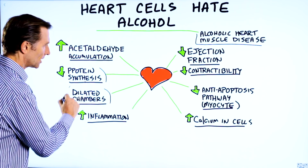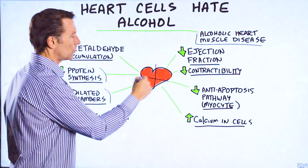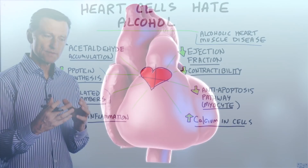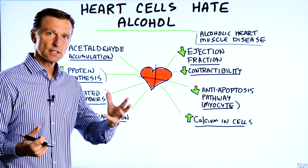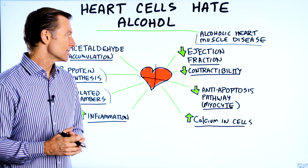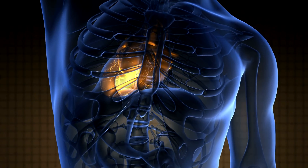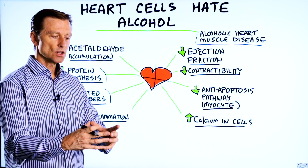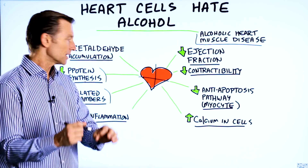Dilated chambers — you have four chambers in the heart, and as these chambers start to enlarge, they don't all enlarge on a symmetry basis. The right side might enlarge more than the left, and that creates all sorts of problems. It can also create arrhythmia problems and murmurs, because as the heart is enlarged, the valves no longer close like they're supposed to.